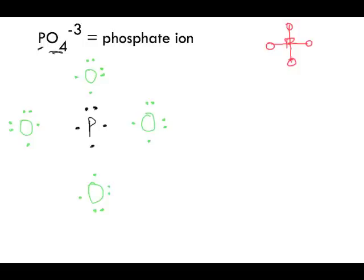All the oxygens have six valence electrons and phosphorus in the center has five. The reason I drew some of them in a certain way is that every time you have these single electrons, this is what I like to call the bonding site — this is where the bonds are going to occur between the atoms.